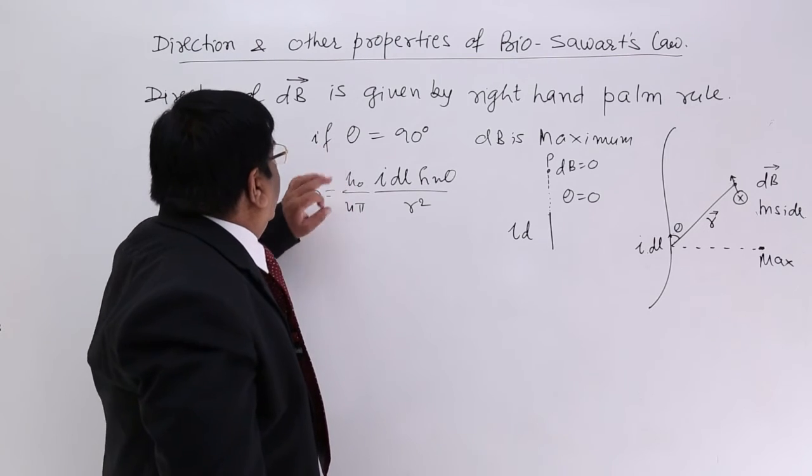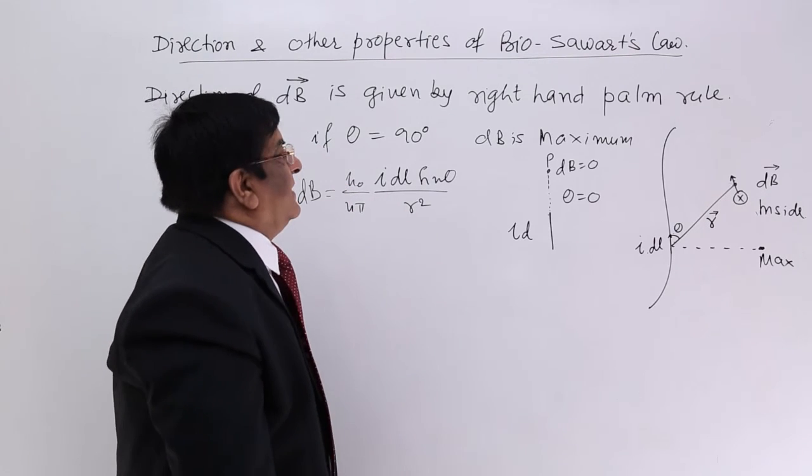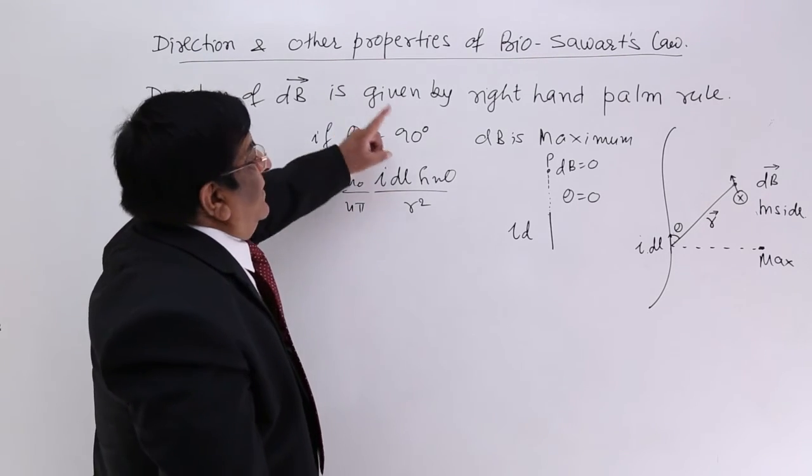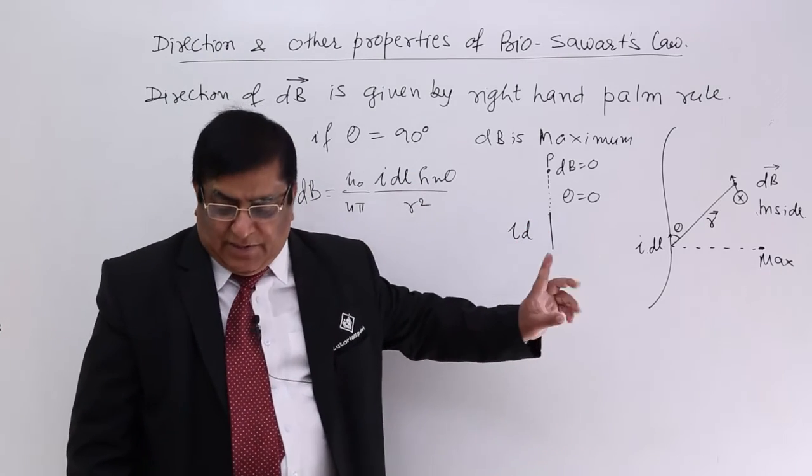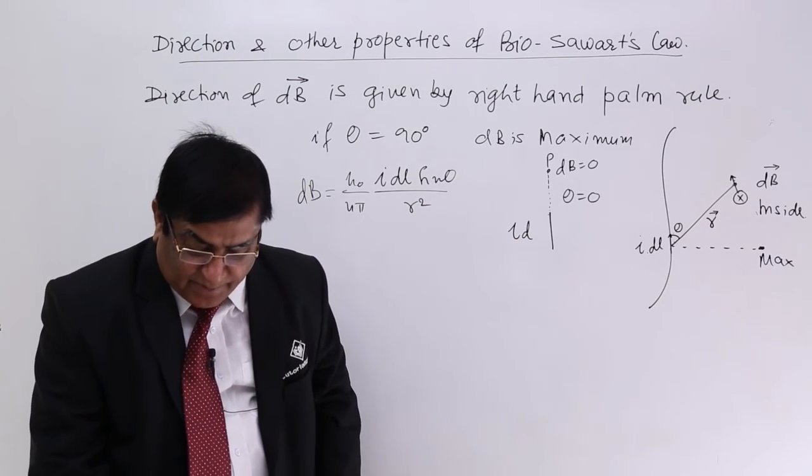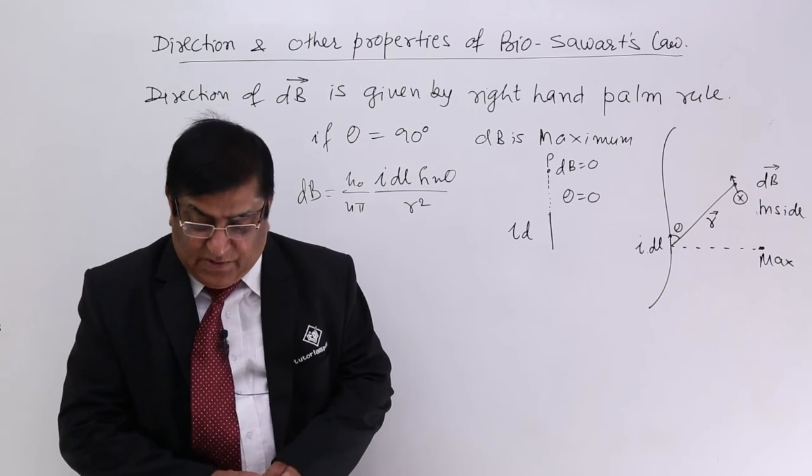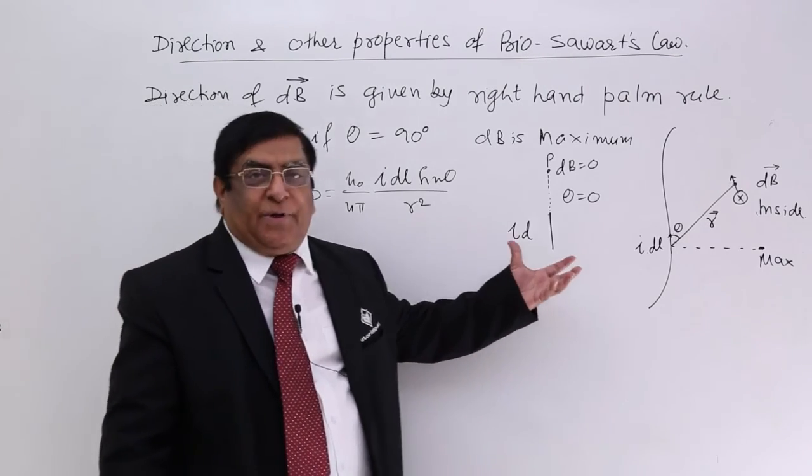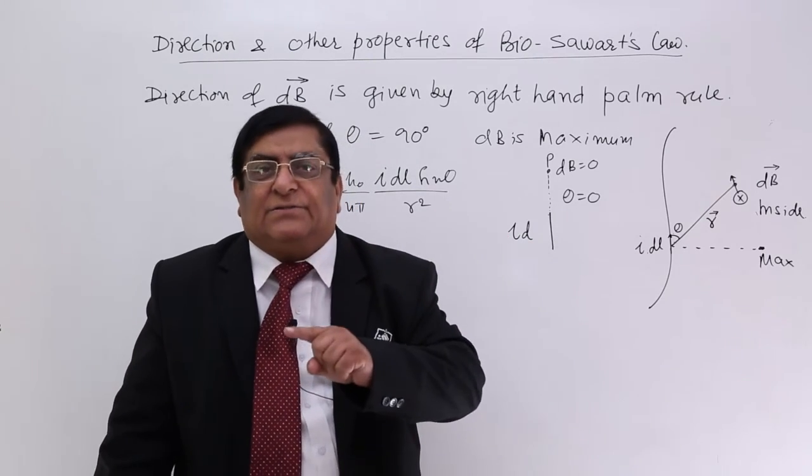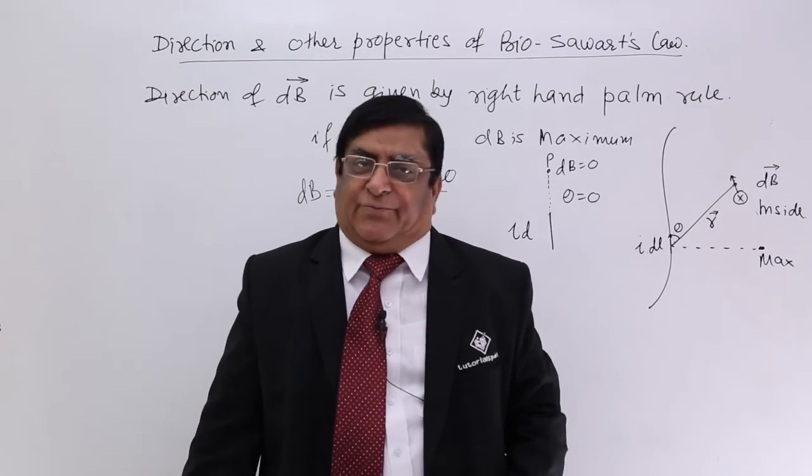Now mu_0 upon 4 pi. Of course we have seen. That is a constant. So we have seen direction. At which point it will be maximum. At which point it will be minimum. So in the next topic we will see how it is compared with the Coulomb's law.